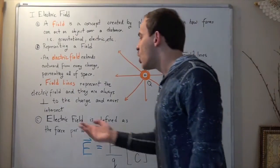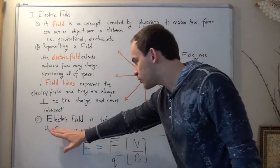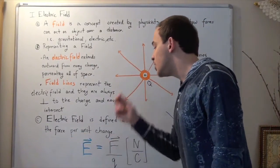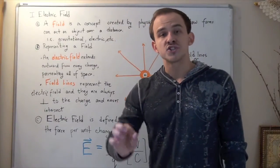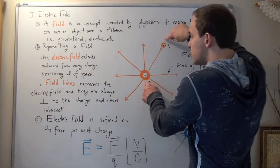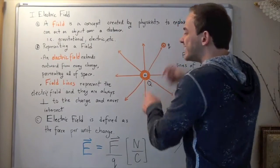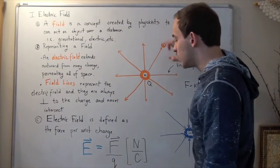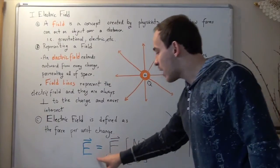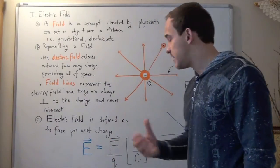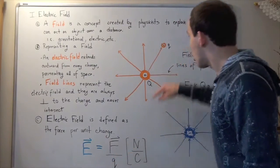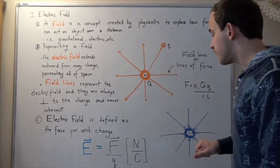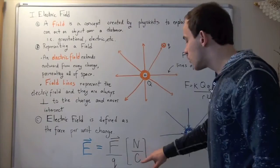Now let's define what an electric field is. An electric field, from a physicist's perspective, is defined as the force per unit charge — the force created by these two charges divided by the point charge q. Since force is a vector, our electric field E must also be a vector, divided by the point charge — whatever charge you place within the electric field. The units are newtons over coulombs.